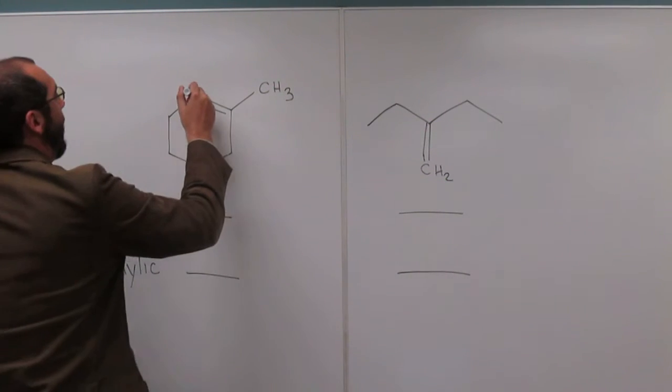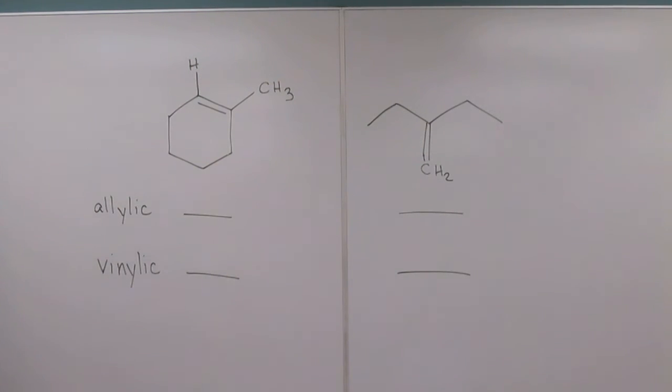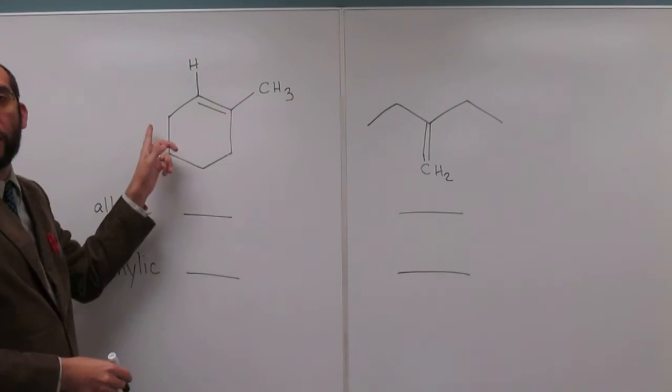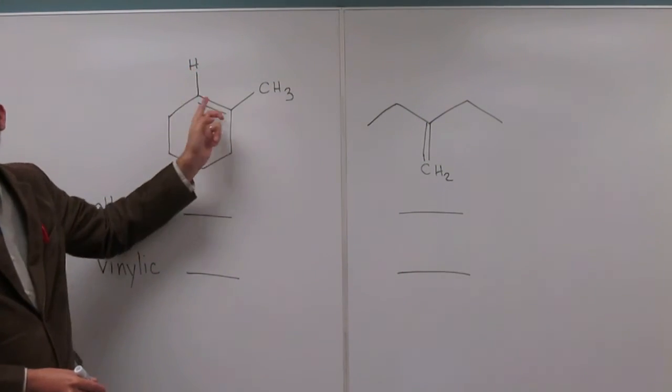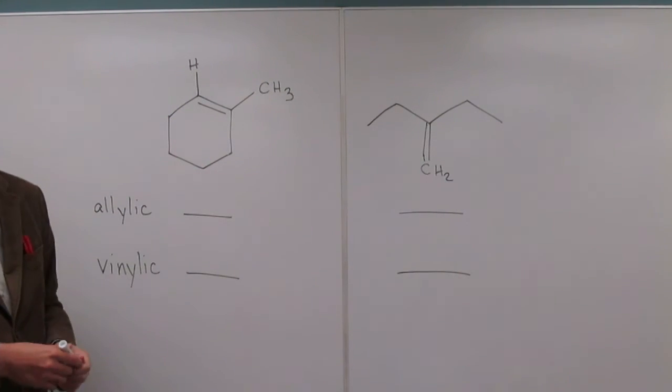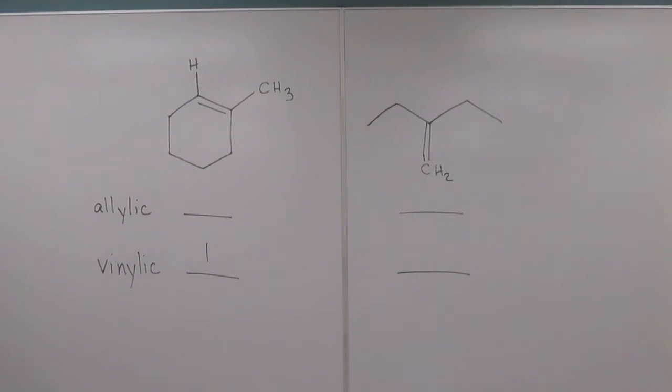So let's draw that hydrogen. Is that where everybody put it? So in this structure here, since we got three carbons and one hydrogen, there's only one hydrogen that's directly attached to the double bond, so we call it the vinylic hydrogen, so there's only one.